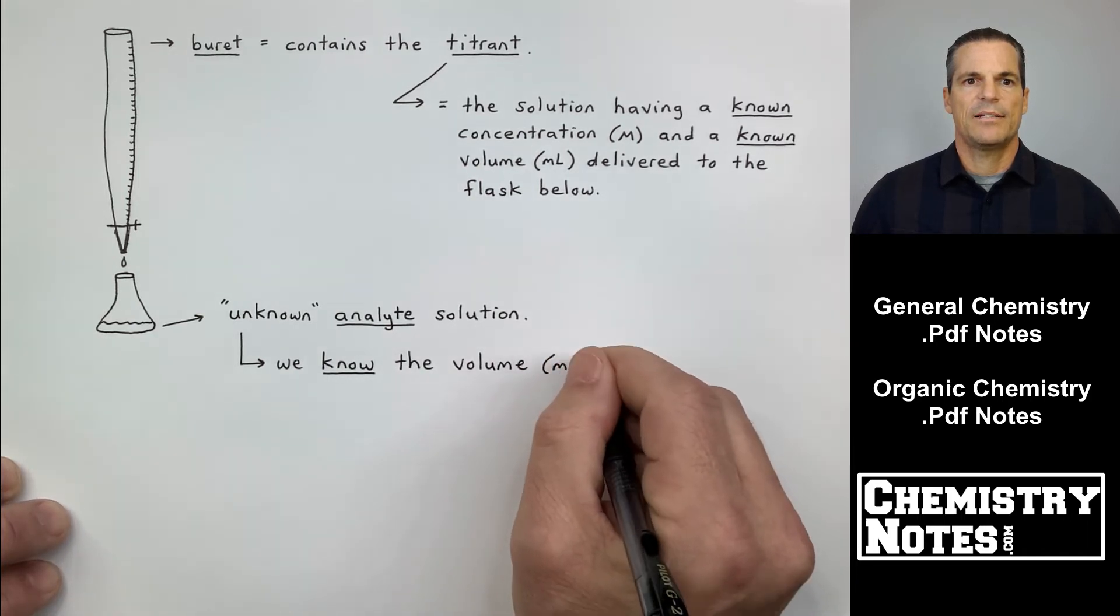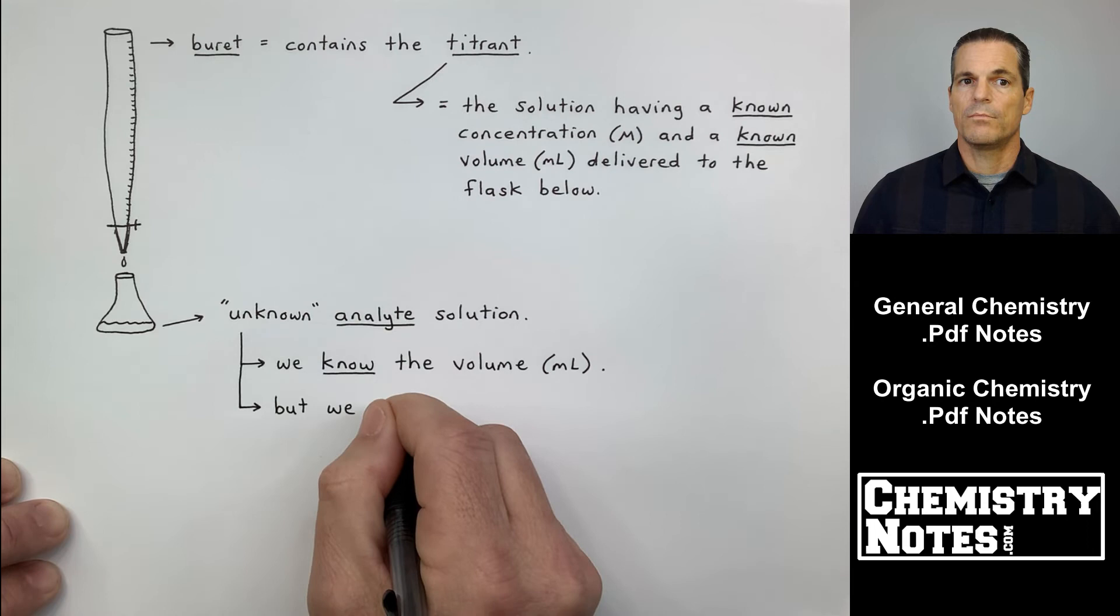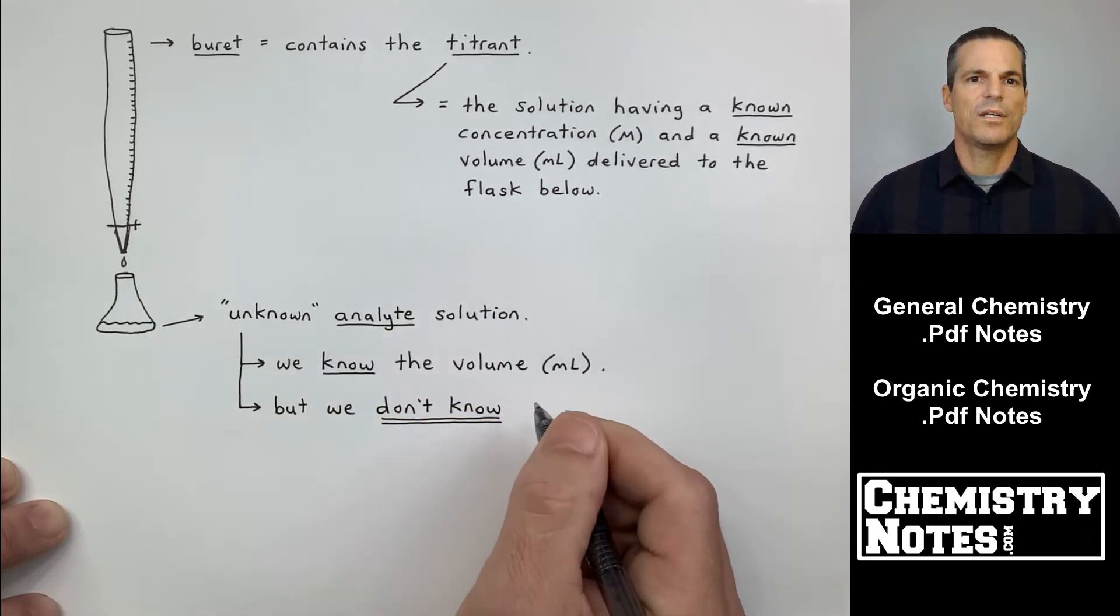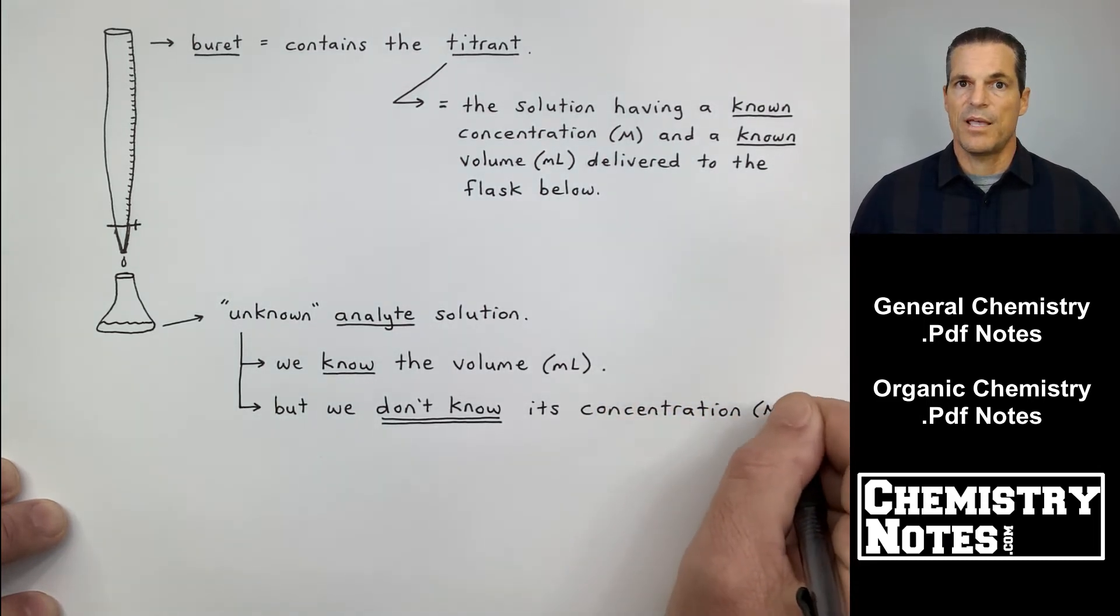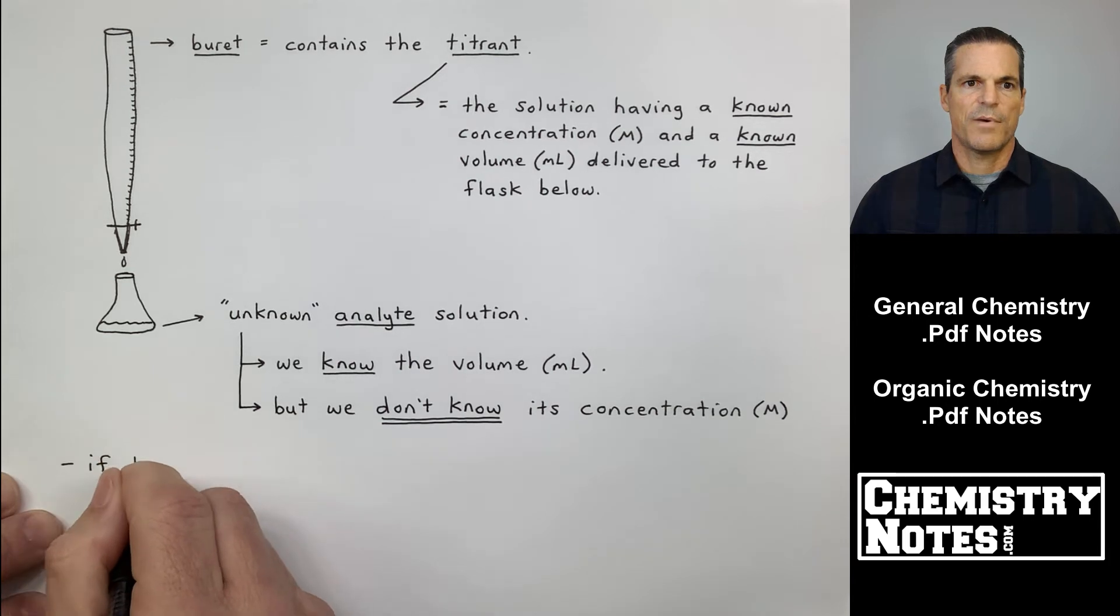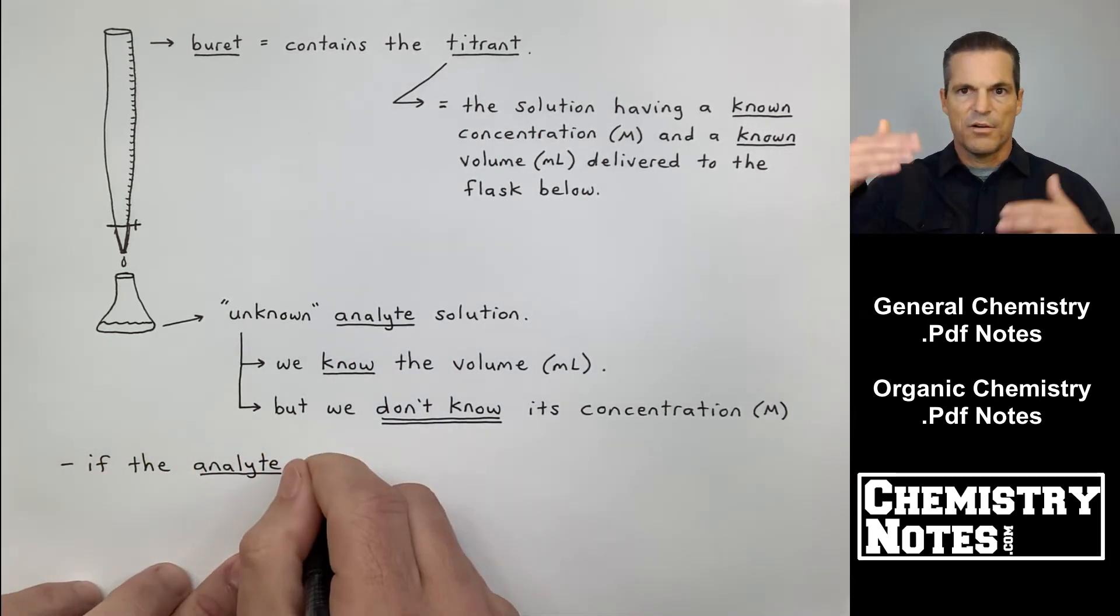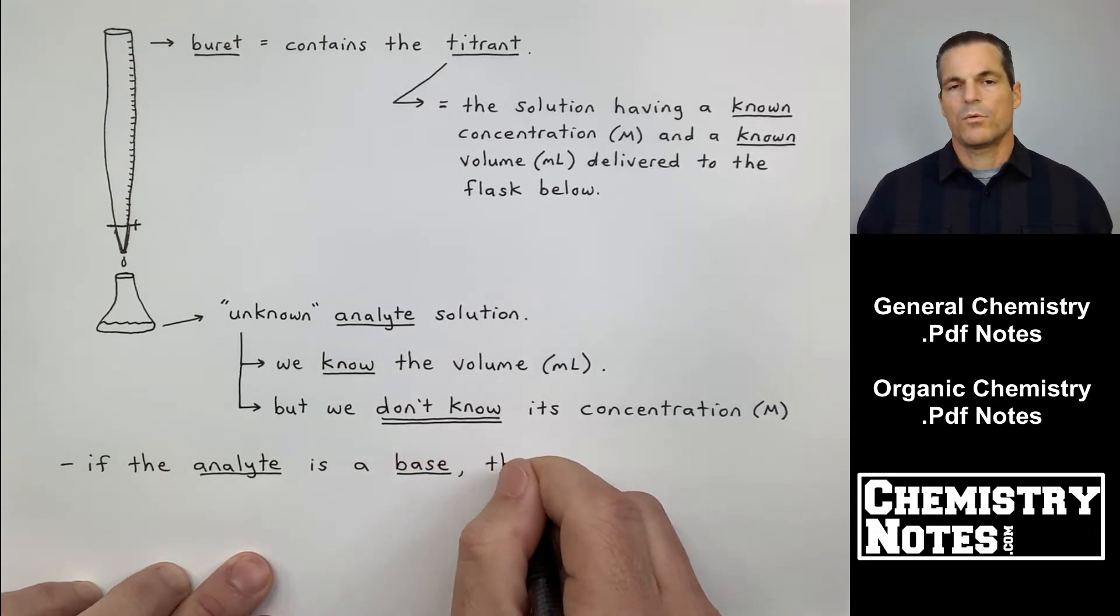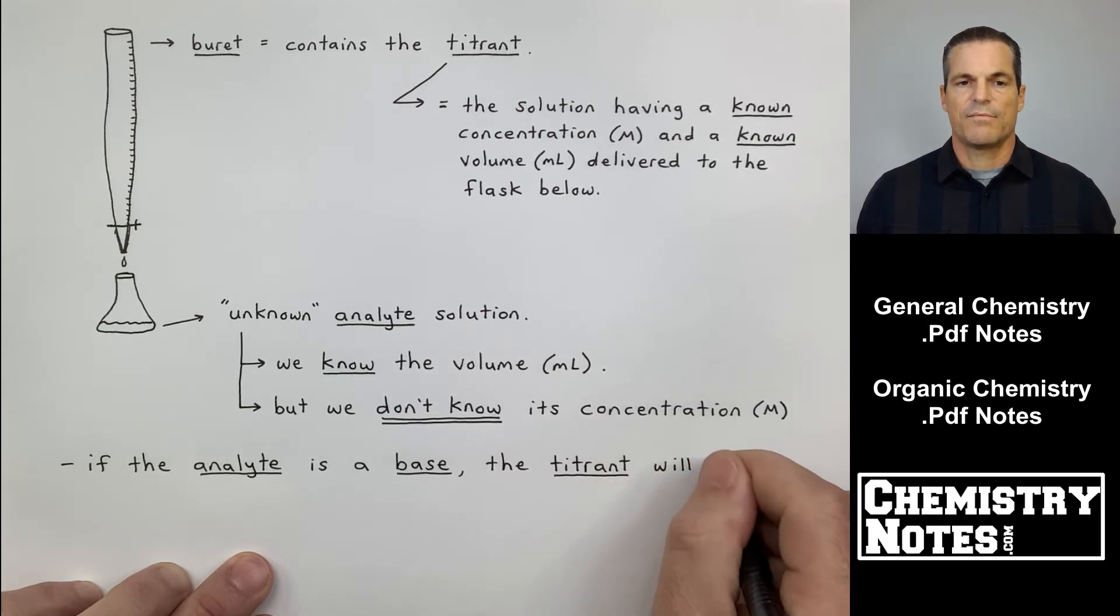Now the unknown in this Erlenmeyer flask here is called the analyte. So the analyte, with the analyte, we know the volume because we measured it out. We know the volume, but we don't know its concentration. So usually what's in the burette is an acid or a base. And then what's in the Erlenmeyer flask is the base or the acid, one or the other.